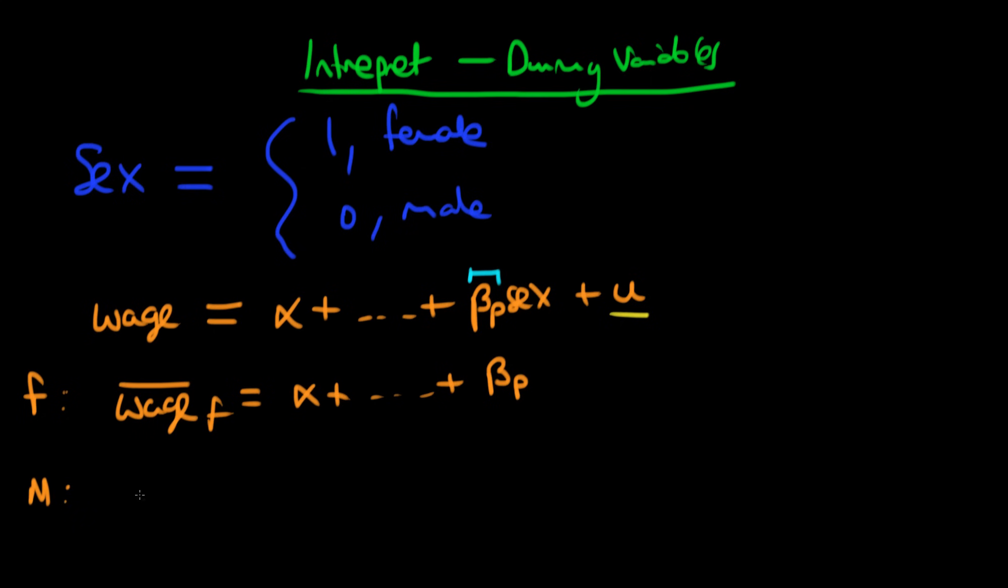Then the idea is that if we find out the average wage which a male might get, then it would be α plus, if we assume that all the other variables are the same, then our variable sex takes on a value of zero. So instead of having β_p, we just have zero here at the end.